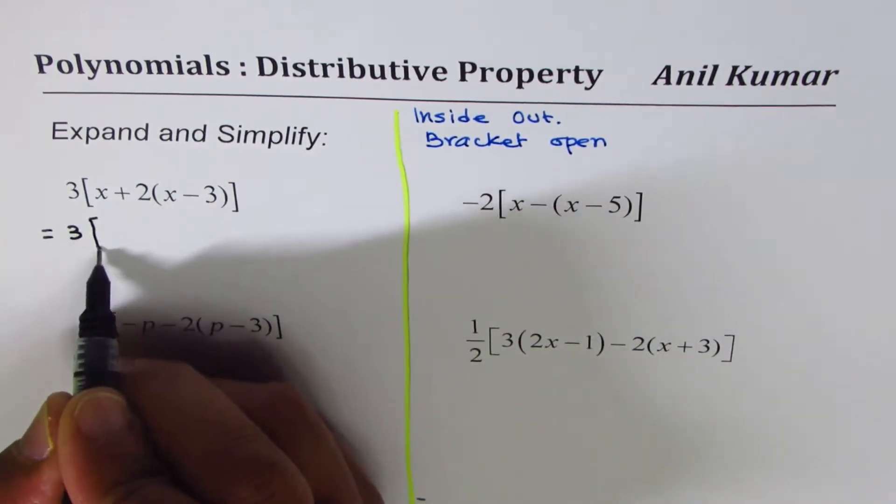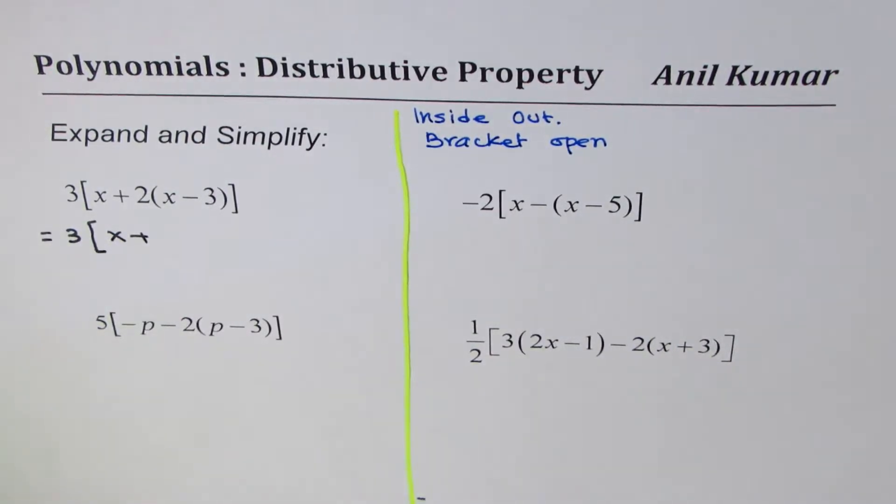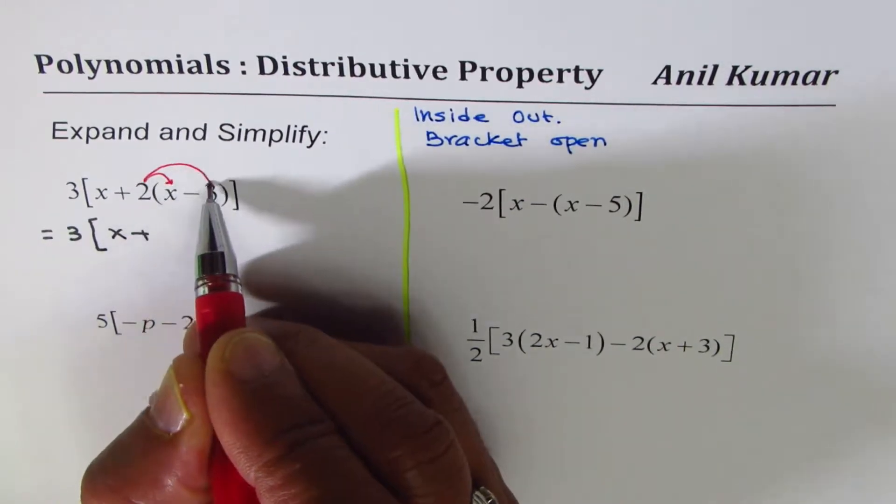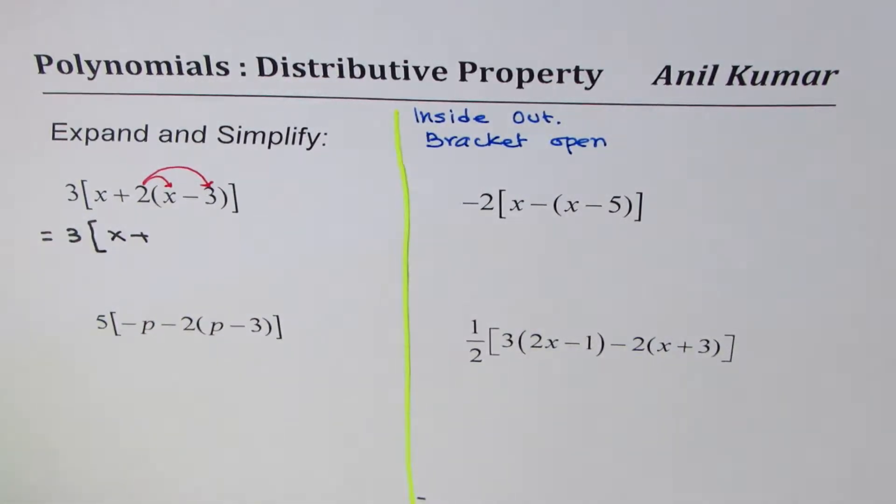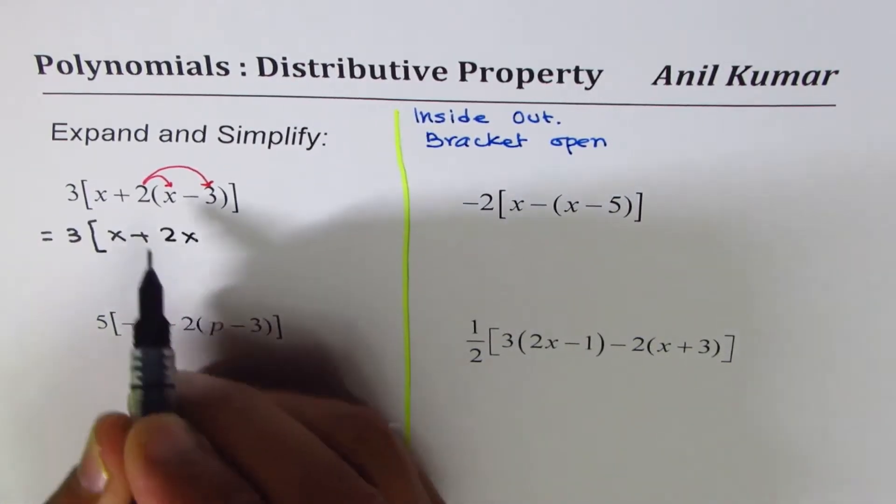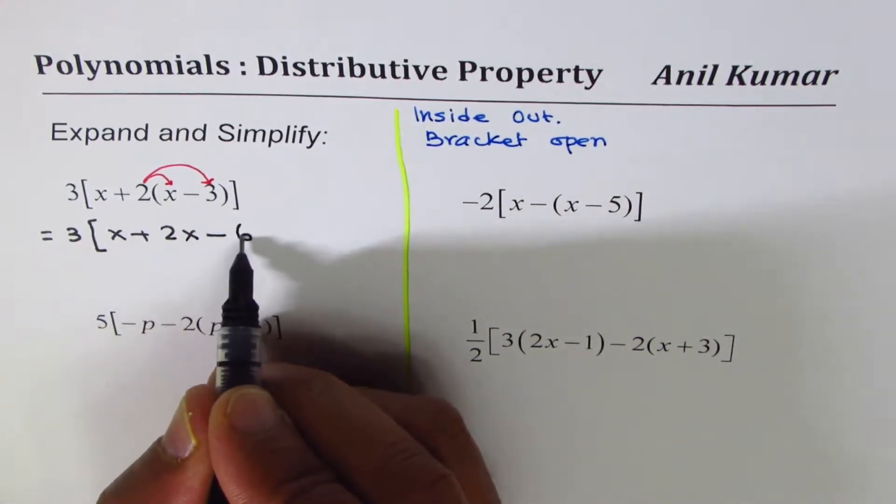Now expand this part using the distributive property. That means we'll multiply x with 2 and also minus 3 by 2. So that gives us 2x plus, times minus is minus, 2 times 3 is 6.